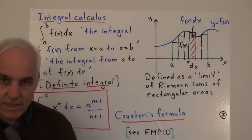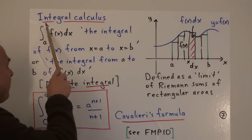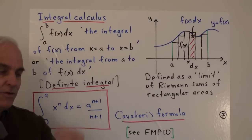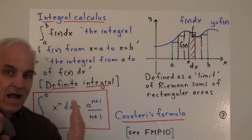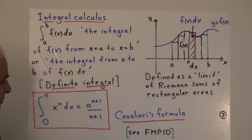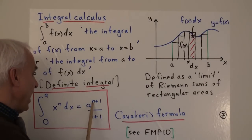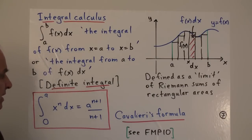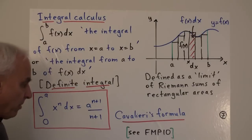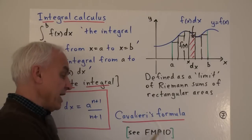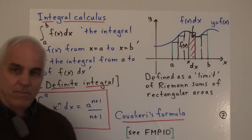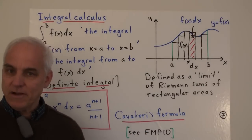This is called a definite integral — an important term because the bounds a to b are definite fixed values. We want to know the area under a particular interval. The most important formula for a definite integral is Cavalieri's formula: the integral from 0 to a of x to the n dx equals a to the n plus 1, divided by n plus 1. That is a fundamental formula for the integral calculus. For how to derive it, you might look at the famous math problem series, number 10, which gives a novel way of understanding why this fundamental fact is true.